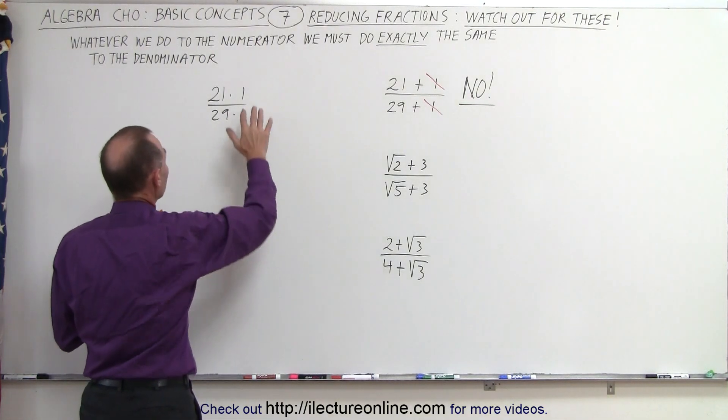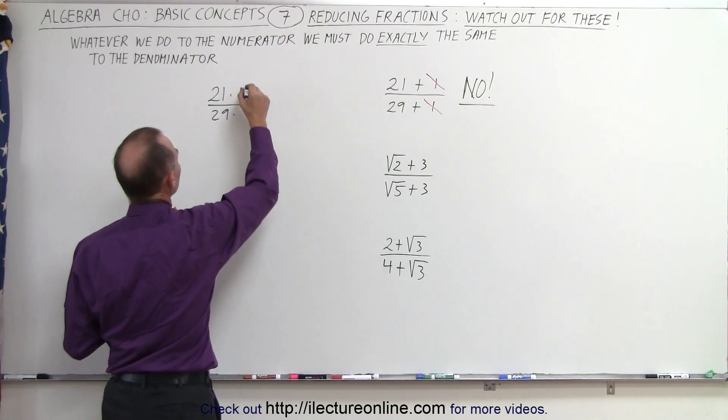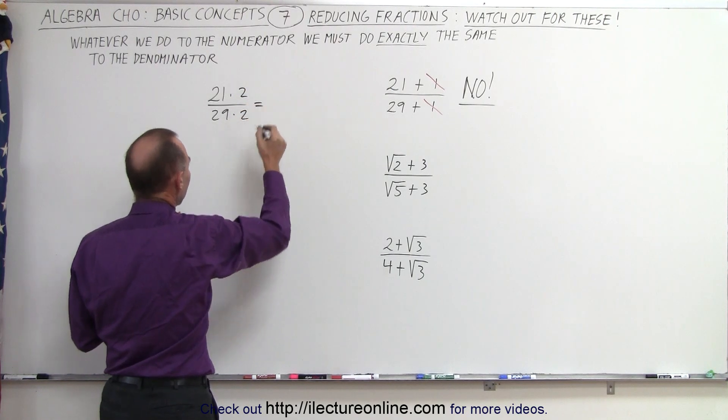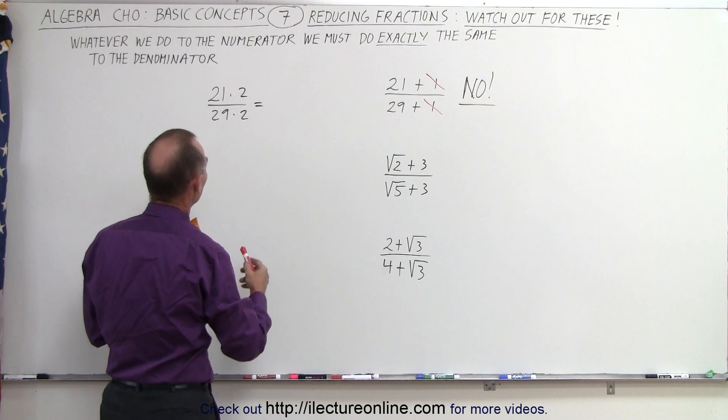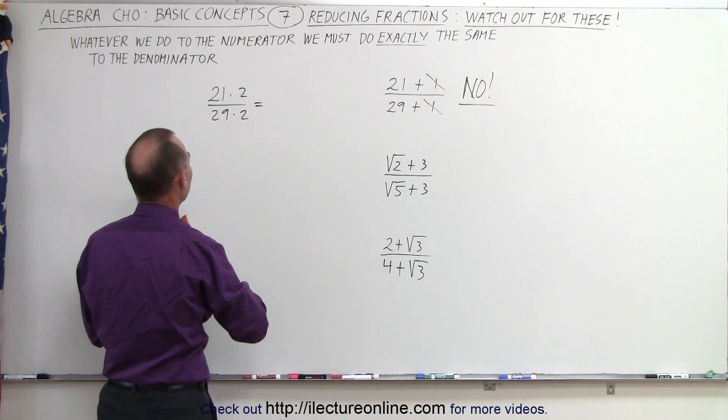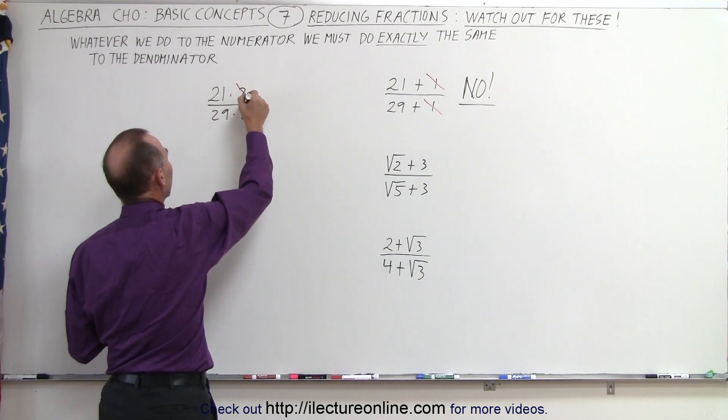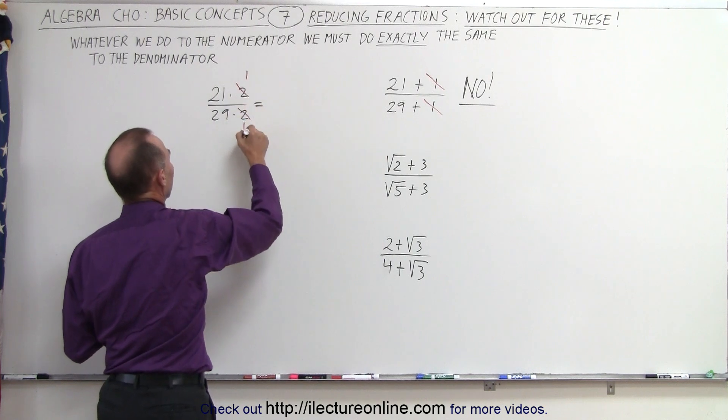So let me show you maybe a better example. Let's say that this was the number 2. Then you can say yes, I can reduce both the numerator and the denominator by dividing the numerator by 2 and dividing the denominator by 2 and getting this. That is allowed.